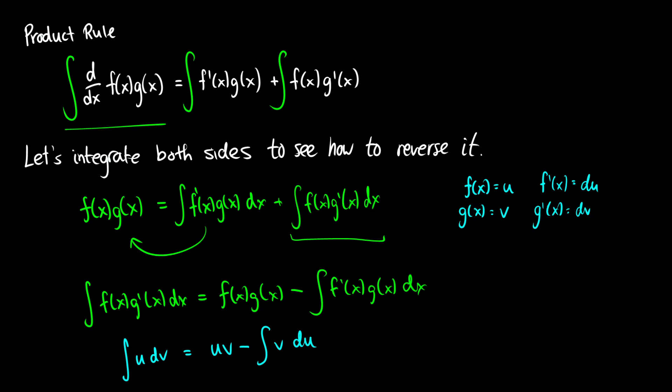This is the reversal of the product rule, and we've shown how we arrive at this formula. The benefit is that if we can take a harder integral in the form ∫u dv and convert it into an easier integral ∫v du, we can solve our problem — since uv doesn't need to be integrated, it's just a function on its own. We'll see how and where this works.